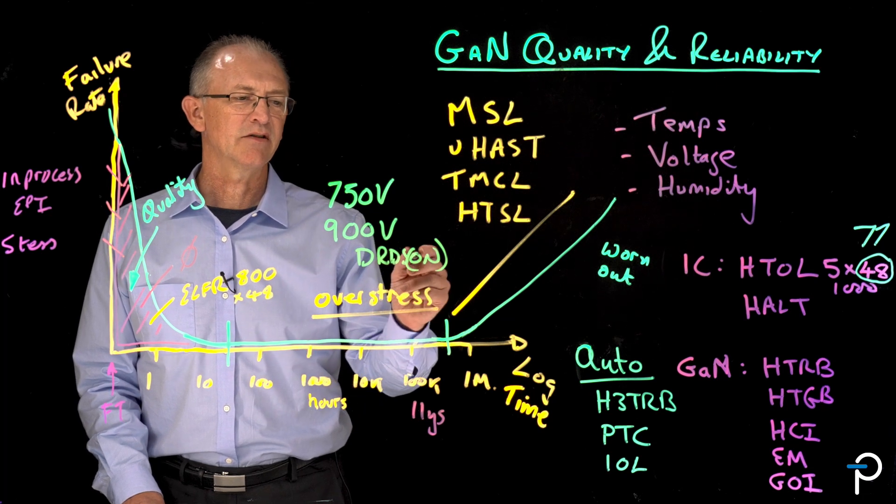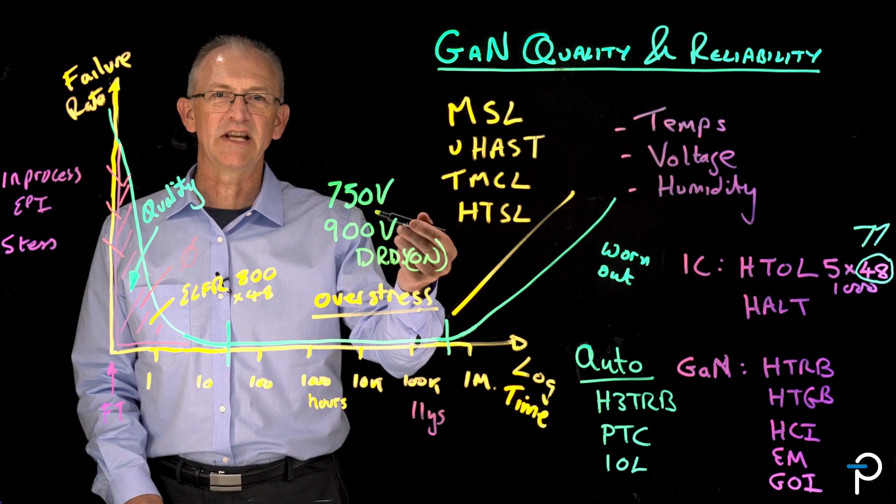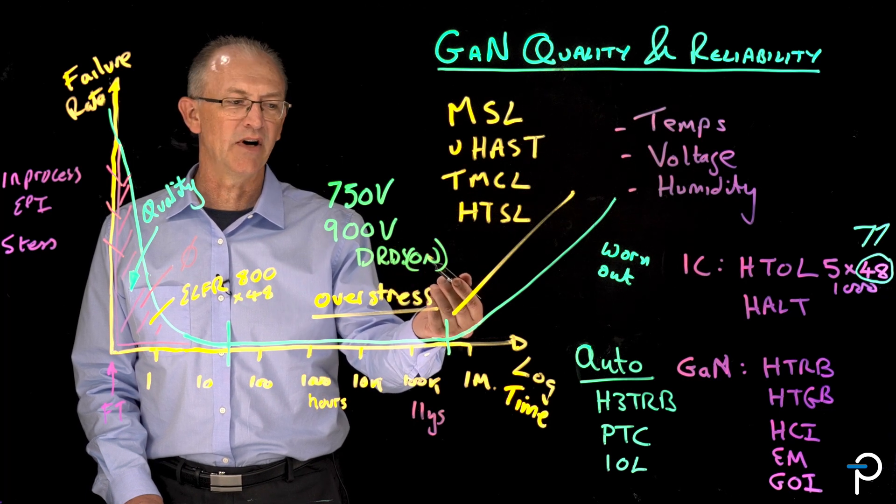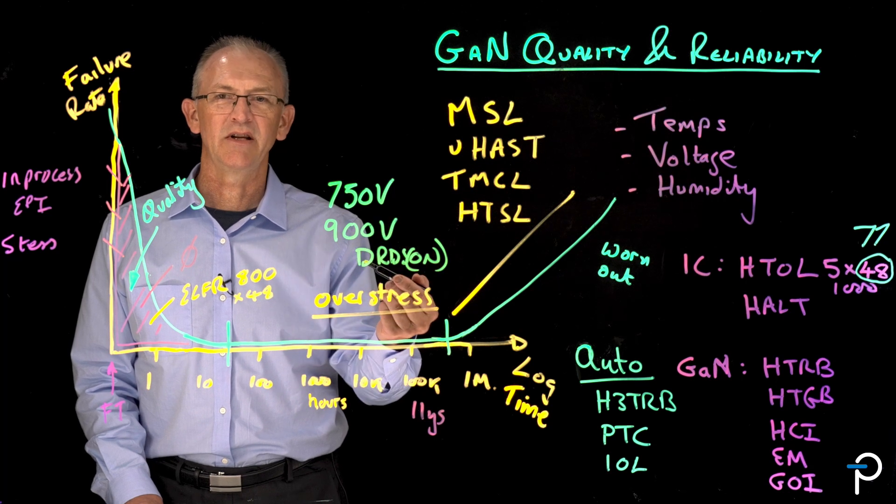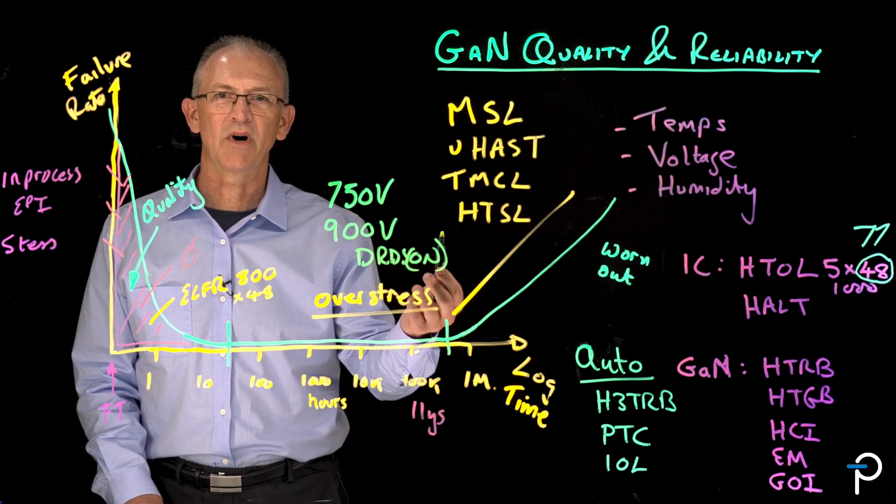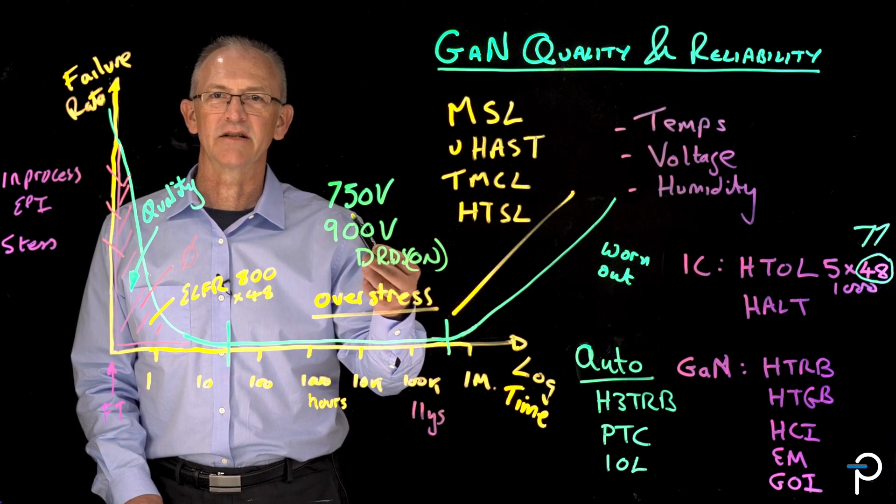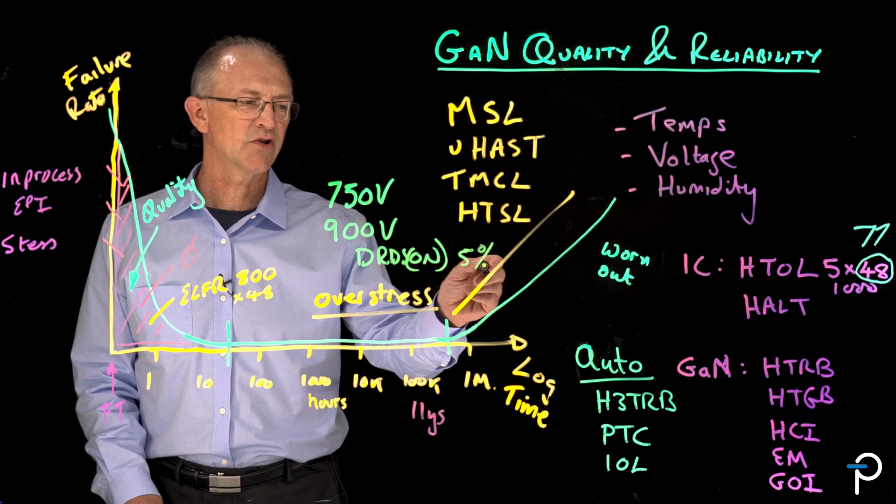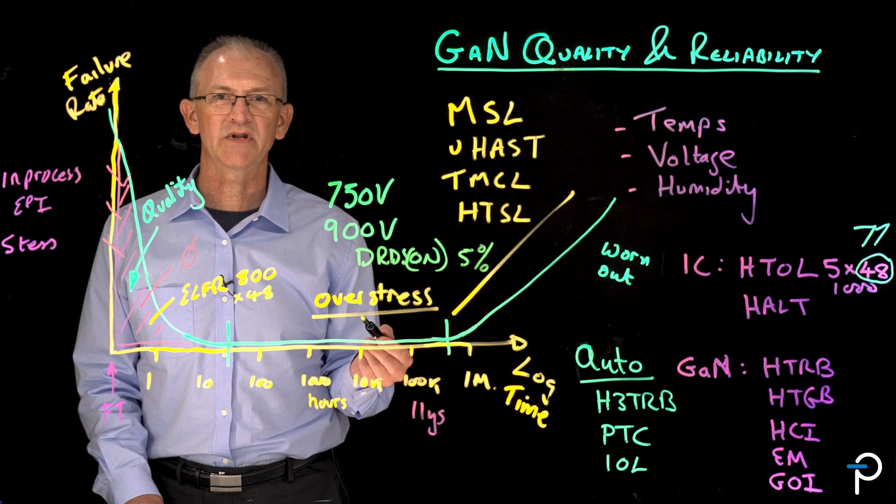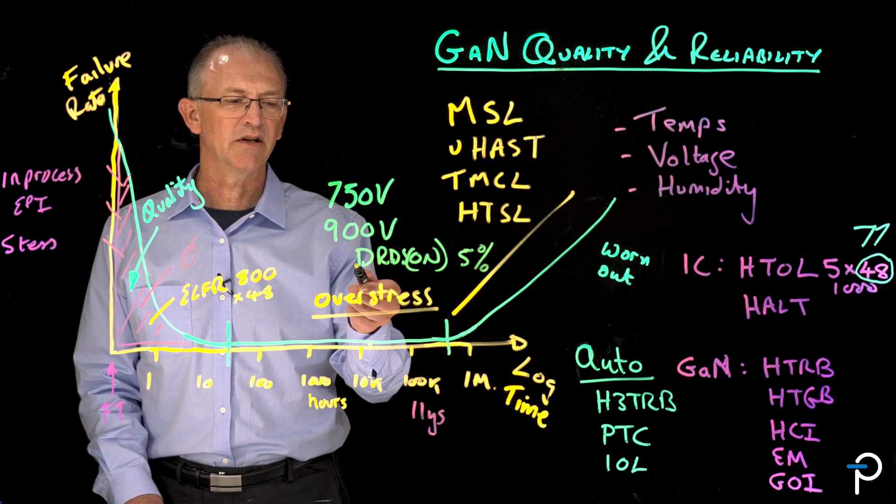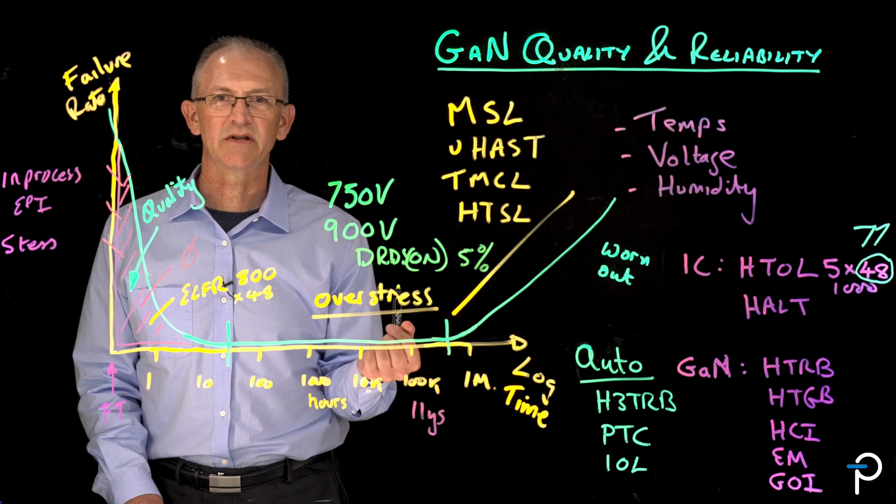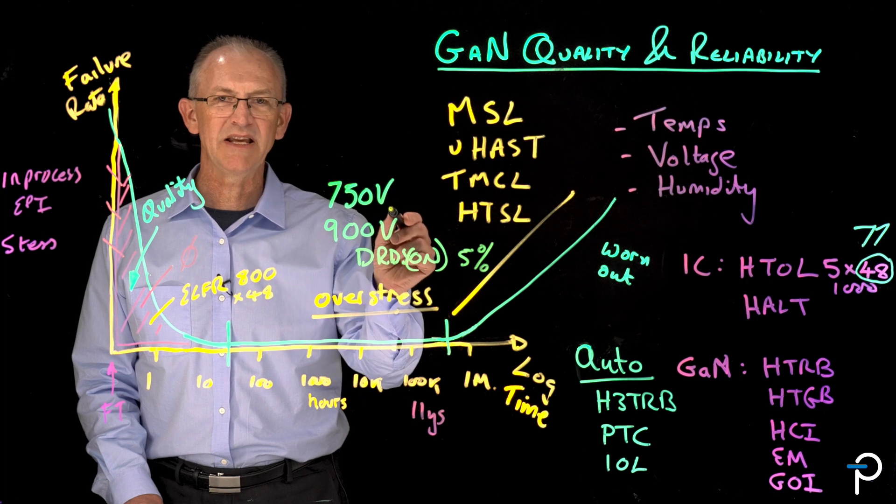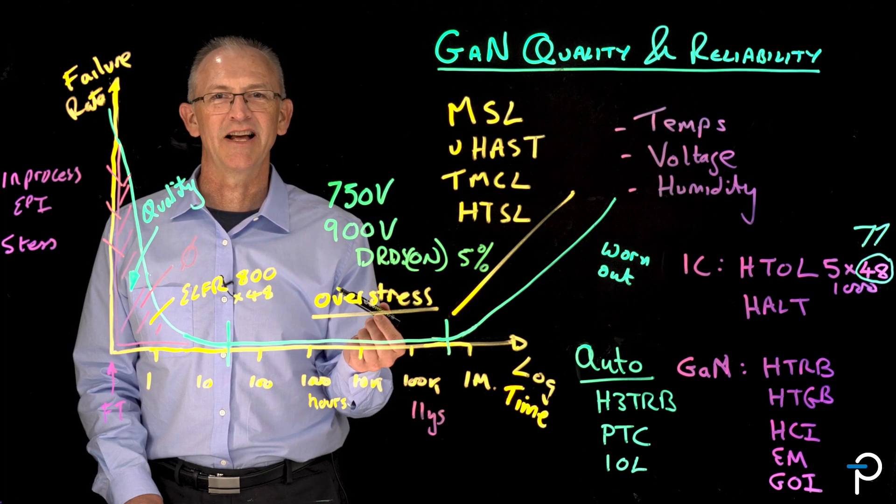And it turns out that when you apply high voltage to GaN, it actually increases the RDS on of the device. It recovers later, but under the initial voltage and for a short while afterwards, it is a higher RDS on. And it turns out somewhat arbitrarily that we've chosen 5% as being the limit that we can accept an increase in RDS on. And that is how we choose the BV of our GaN devices.